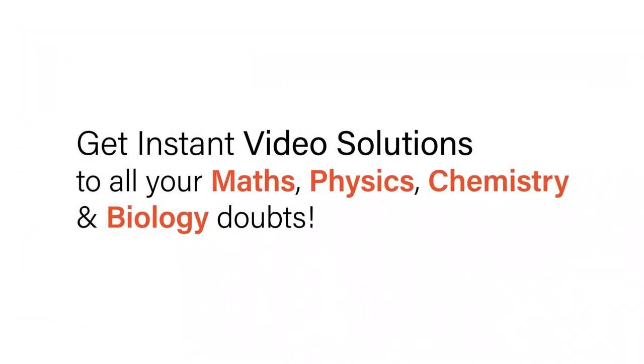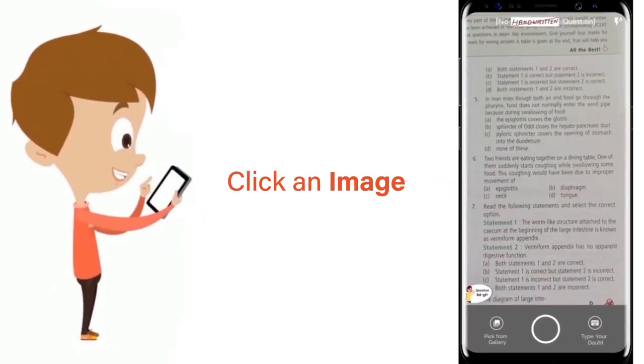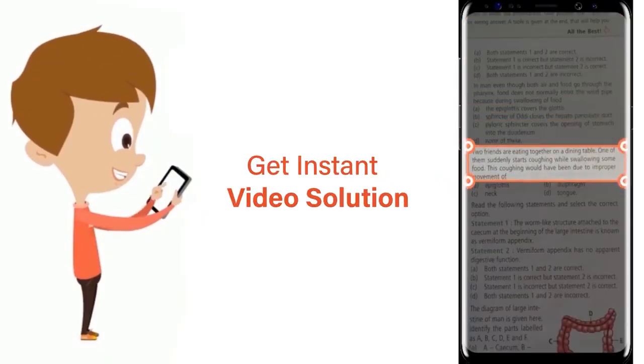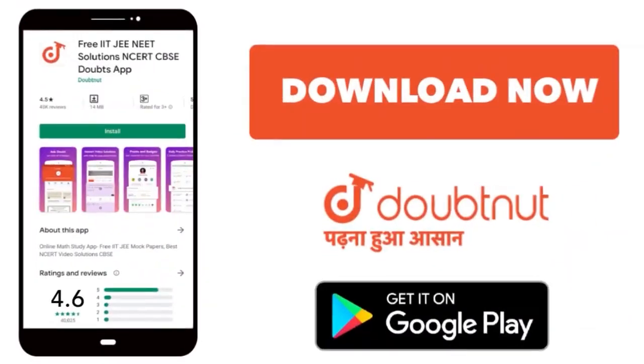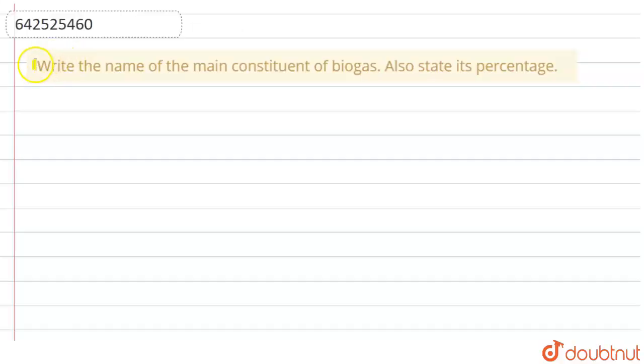With Doubtnut, get instant video solutions to all your maths, physics, chemistry, and biology doubts. Just click the image of the question, crop the question, and get instant video solution. Download Doubtnut app today. The question here is: write the name of the main constituent of biogas, also state its percentage.